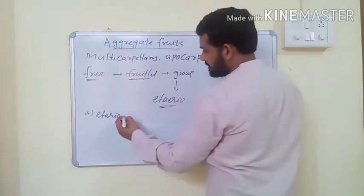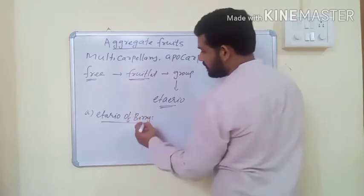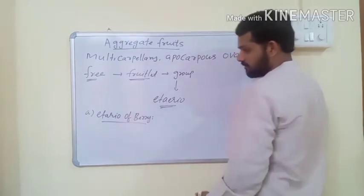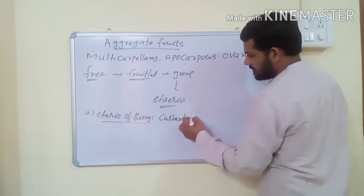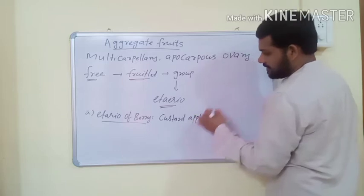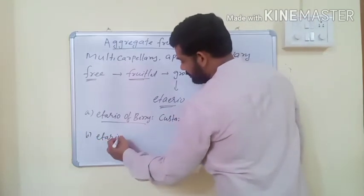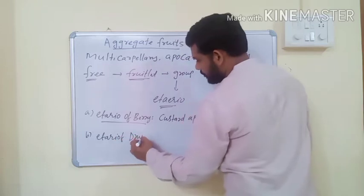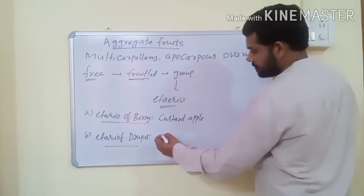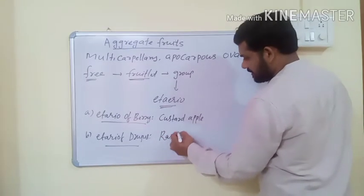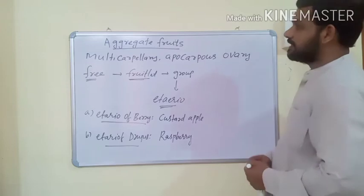There are different types of aggregate fruits. The first type is etaerio of berries - a group or aggregation of berries - and the best example is custard apple. The second type is etaerio of drupes - a group of drupes - and the example is raspberry. These are the different types of aggregate fruits.